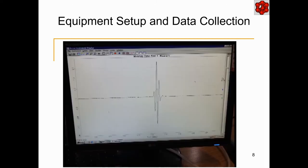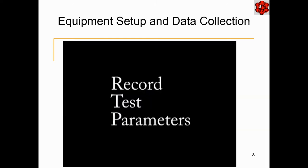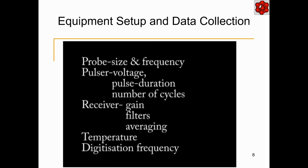Having adjusted the small range for our data acquisition window, we can now adjust the delay to see the water signal at the midway point in the window and adjust the amplitude to approximately 80% or 90% full screen height. At this point, we should record all the parameters of interest in case we would like to repeat the test. These would include probe parameters such as probe size and frequency, pulser parameters, voltage, pulse duration, number of cycles, the receiver parameters, gain or attenuation settings, filters and averaging, water temperature, and digitization frequency.